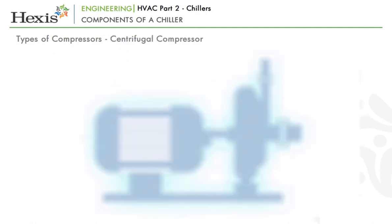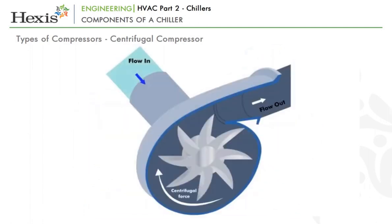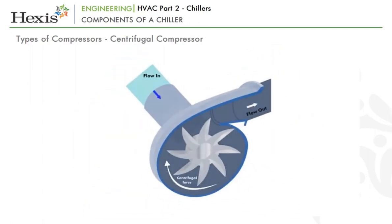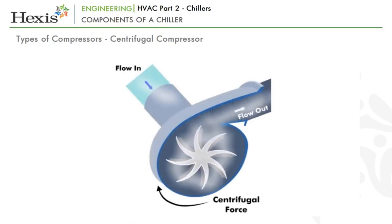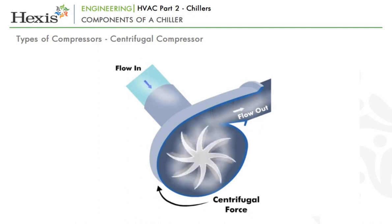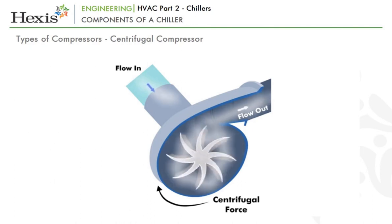The second type is the centrifugal compressor, which uses centrifugal force via a high-speed rotating impeller to increase the pressure or temperature of the gas. The gas is sucked into the rotating impeller at its axis, i.e. center, and as it moves outward it gains speed and is compressed as it reaches the outside edge of the impeller blade.